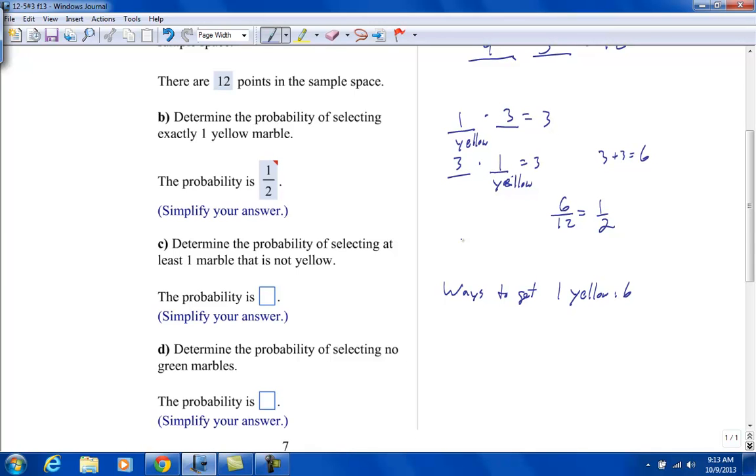And now, how about getting no yellows? That means for the first one there are three, and for the second one there are two. No yellow. Three times two is six. We have six plus six is twelve. Twelve over twelve is one. You're guaranteed to get at least one that's not yellow. That's what that's saying. Because there's only one yellow, the second one has to not be yellow. We can reason that out or we can show mathematically.